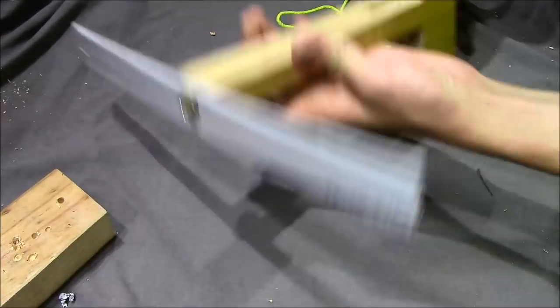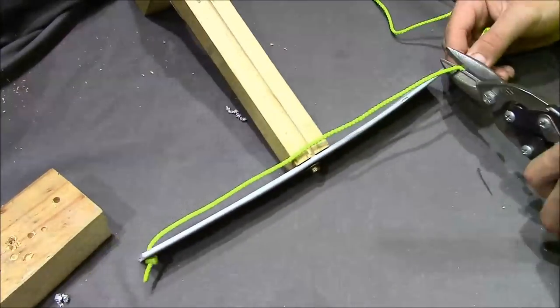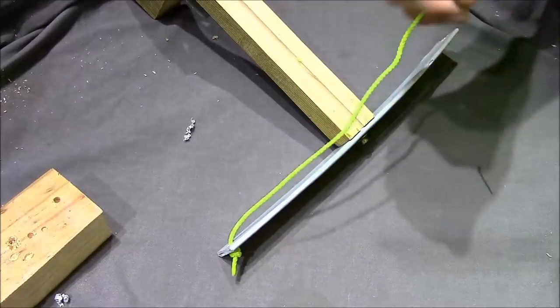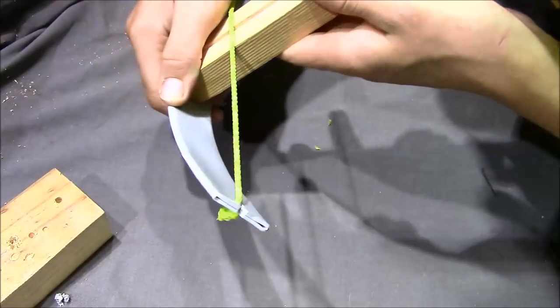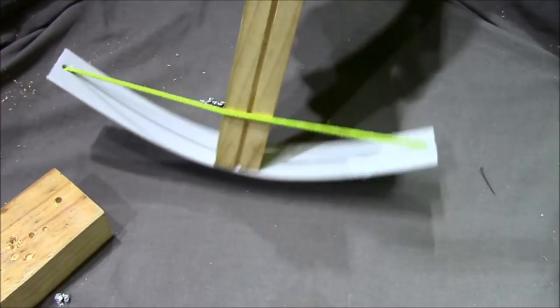Now I'm just going to be stringing the crossbow. All I've done is drill holes in the end of the limbs and I'm just threading the string through and tying a knot on the other side.